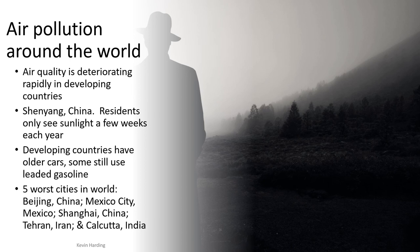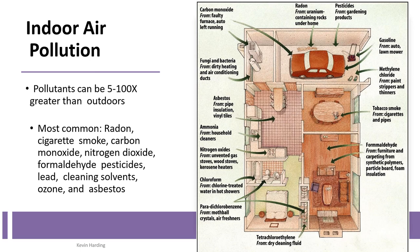The worst cities for air pollution include Beijing, Mexico City, and Shanghai — in China and India — as well as cities in Iran. These match the countries that appeared in red zones on the global air quality map shown earlier.